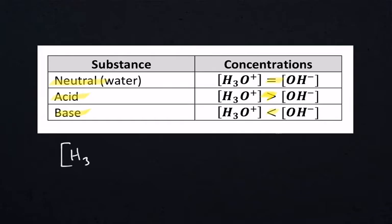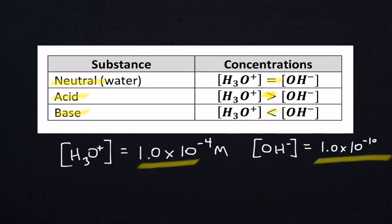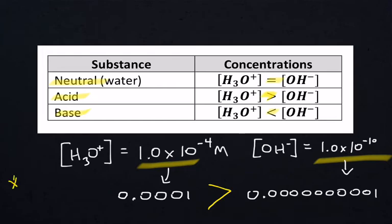Let's take a look at an example. Imagine the hydronium concentration is 1.0 times 10 to the negative 4th molar, and the hydroxide concentration is 1.0 times 10 to the negative 10th. Out of scientific notation, these are 0.0001 and 0.0000001—which is smaller? The one on the right. This means the substance with the greater amount of H3O+ is an acid.